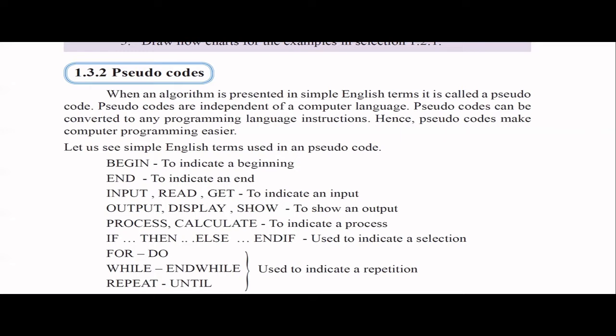So in this video I will be talking about pseudocodes. You can represent an algorithm in two ways. One is the flowchart, which is a graphical representation. The second method is the pseudocode — it's like simple English terms. When you present an algorithm in simple English terms, we call it a pseudocode. Pseudocodes are independent of computer language.